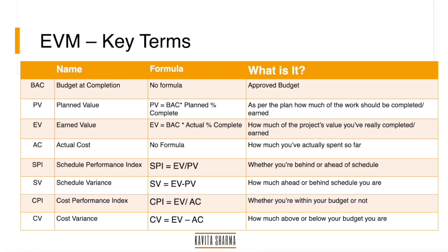The first term is BAC — Budget at Completion. There is no formula for BAC; it is the total budget that senior management has allocated to your project. It is the approved budget, also known as the cost baseline.